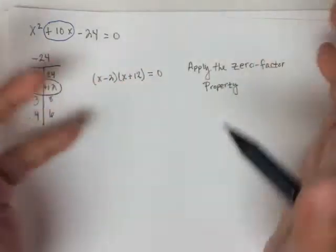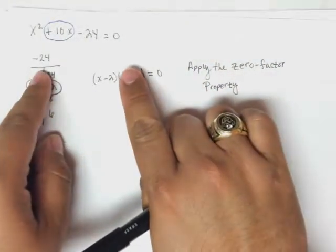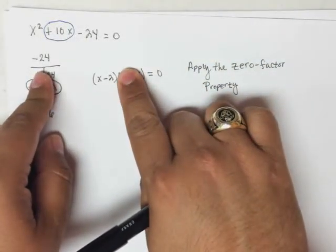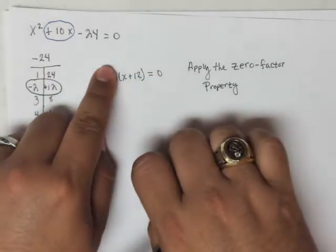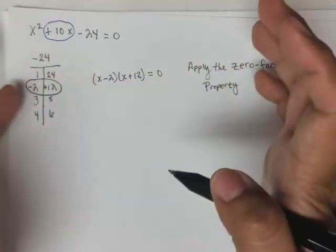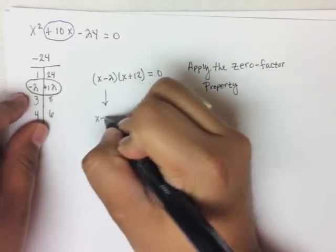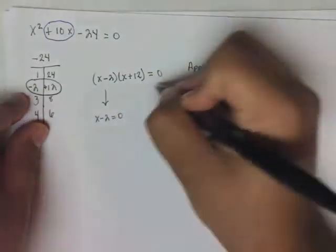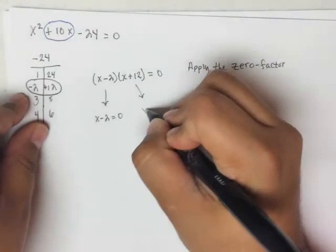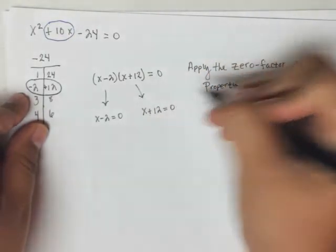So, that's exactly what we're going to do, is we're going to take each of the factors separately, and set them equal to 0, and then we're going to solve for x. So, let's take this one, x minus 2 equals 0, and then we're going to take this one, x plus 12 equals 0.